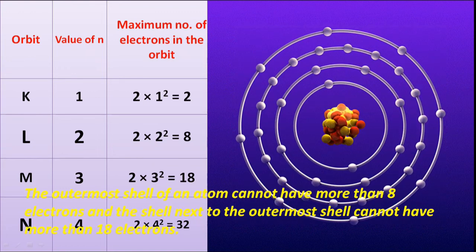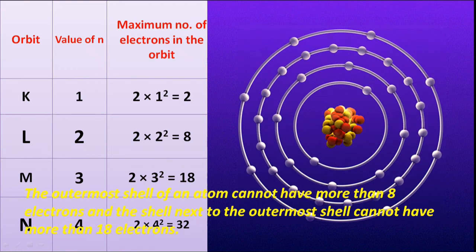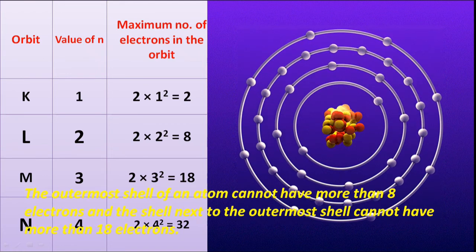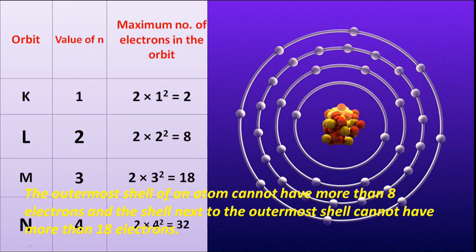maximum electrons 2 × 4² = 32. The outermost shell of an atom cannot have more than 8 electrons, and the shell next to the outermost shell cannot have more than 18 electrons.